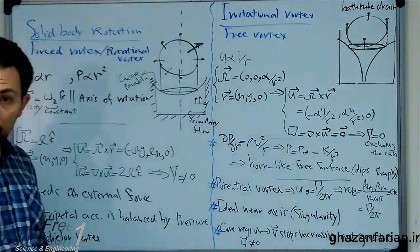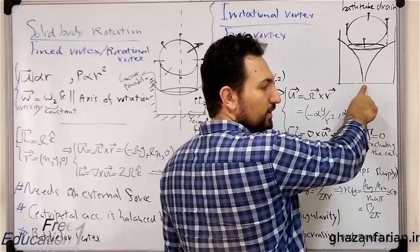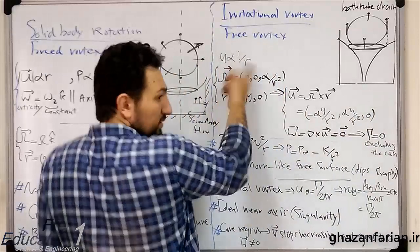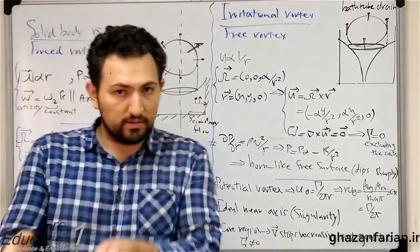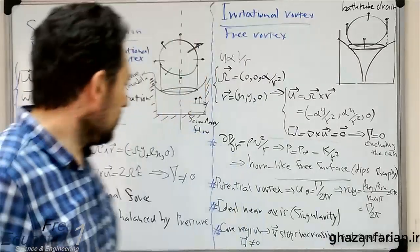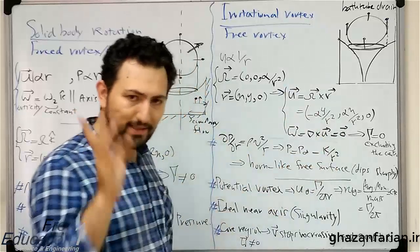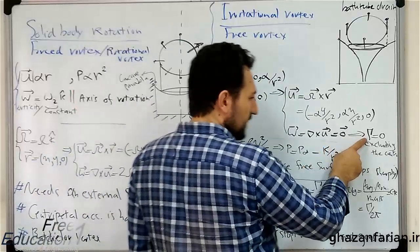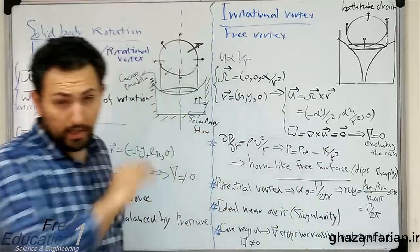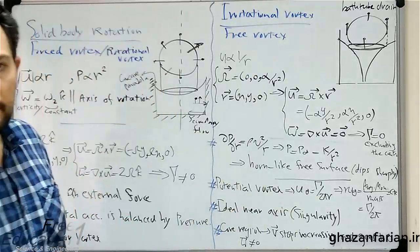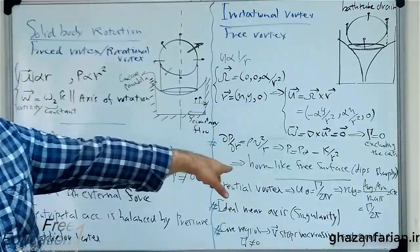So the flow is irrotational, but there is an important point: there is a singularity in this flow field at the axis of rotation or the centerline. The velocity and angular velocity are both related to the inverse of r, so if r equals zero, a singularity appears. Therefore, the vorticity vector is zero everywhere in the flow field except at the centerline. The circulation is zero along any closed curve excluding the centerline, but if the closed curve contains the centerline, the circulation is not zero.